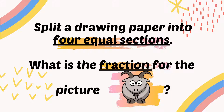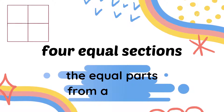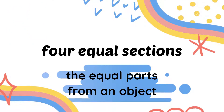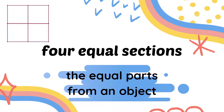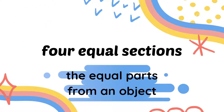We have 3 clues here. The first one is '4 equal sections', the second one is the word 'fraction', and the third one is 'the picture of a goat'. I'm going to explain what is the meaning of 4 equal sections in the question. 4 equal sections means the equal parts of an object — the paper is split into 4 equal parts as shown in the diagram.